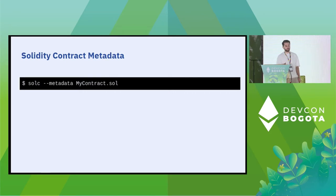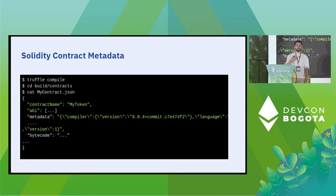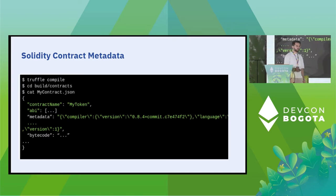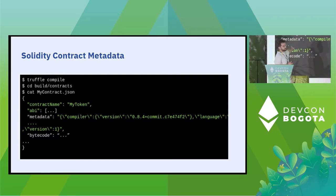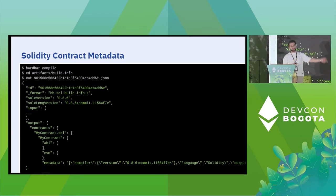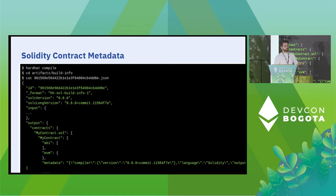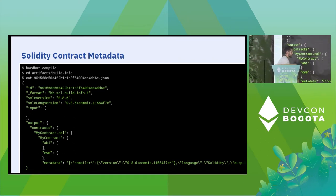You can get the metadata with the metadata flag on the compiler itself. With frameworks, you can find it inside the build files. Truffle, for example, puts this inside build/contracts/<ContractName>.json under the metadata field. Hardhat also started to output metadata inside the build files.